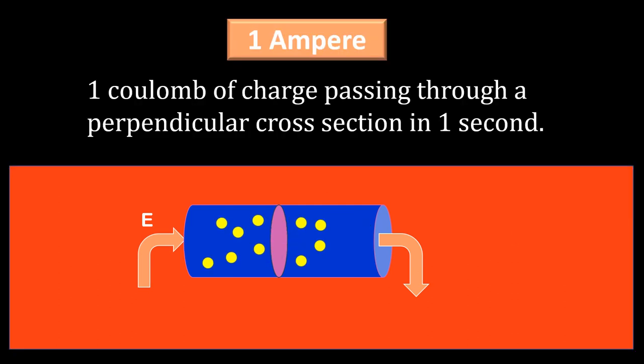What is 1 ampere? One coulomb of charge passing through a perpendicular cross-section in one second. If dQ was one coulomb and dt is one second, then I will be equal to one ampere.